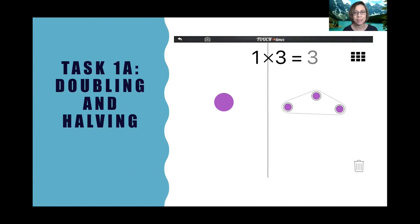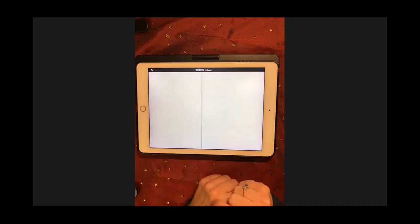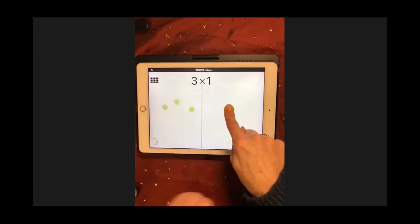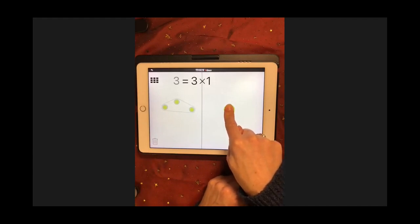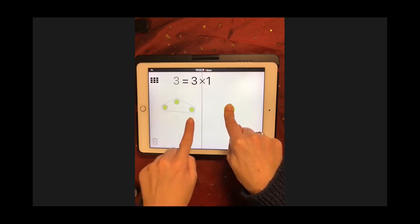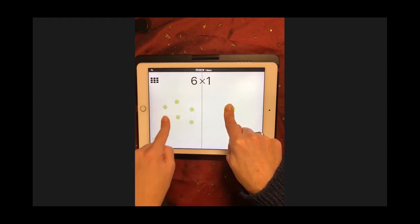Let's have a look at some tasks that can be used with Touch Times in your classroom. The first tasks involve doubling and halving. So I might say to my students, your challenge today is to double the product so that it is six. What is a product again? Yes, a product is the math name for a multiplication answer. See if you can figure out how to make the product six by changing only the number of pips. Once you've done that, double the product again to make 12, then double it again to make 24.